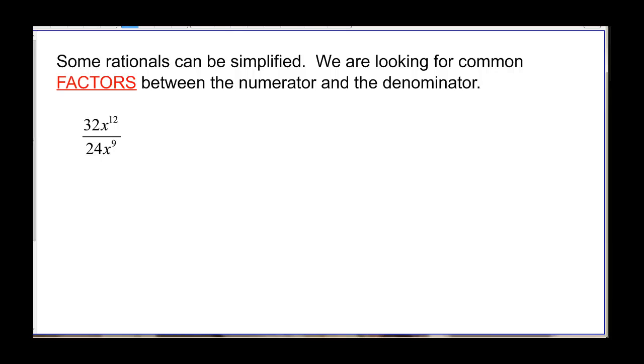Some rationals can be simplified, and we are looking for common factors when we simplify these between the numerator and denominator. Because remember, if you have a factor on the top and the bottom, they cancel each other out because they've just become 1. So when you look at 32x to the 12th and 24x to the 9th, I'm looking at that and I'm saying, well, 24 and 32 both have 8 in common. This would be 8 times 4, and then I've got my x to the 12th. And 24 would be 8 times 3, and I've got x to the 9th. So my 8ths cancel each other out. That leaves me number-wise with a 4 and a 3. And then remember that all of these are going to cancel out 9 of those. So take 9 of them off, and we find out that we have x cubed.